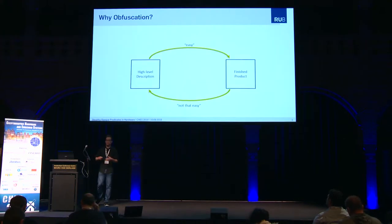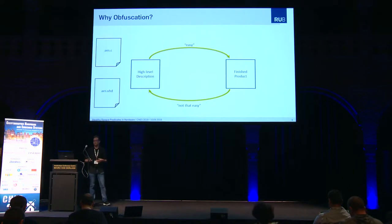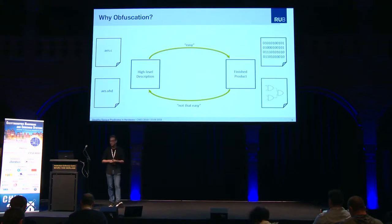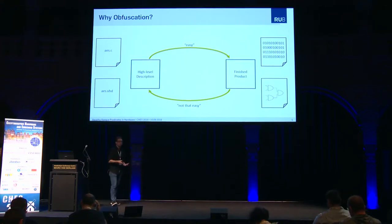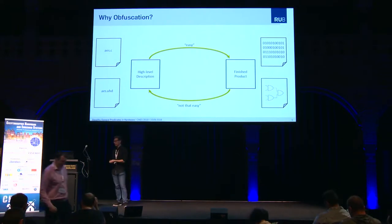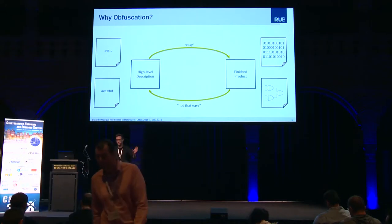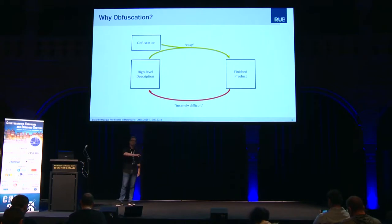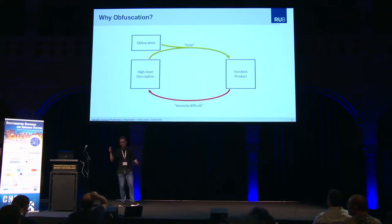Why do we need obfuscation? If you want to manufacture a product, you have a high-level description of it — imagine some kind of C code or your hardware description language — and you turn it into your finished product, some binary or some gate-level netlist, and the way to the product should be really easy. And if someone now wants to reverse engineer your product, so he wants to go back from the product to the high-level description, this is not that easy. And now if we take obfuscation into play, the way from the high-level description to the product should still be easy, but the way back — the reverse engineering — should be insanely difficult.